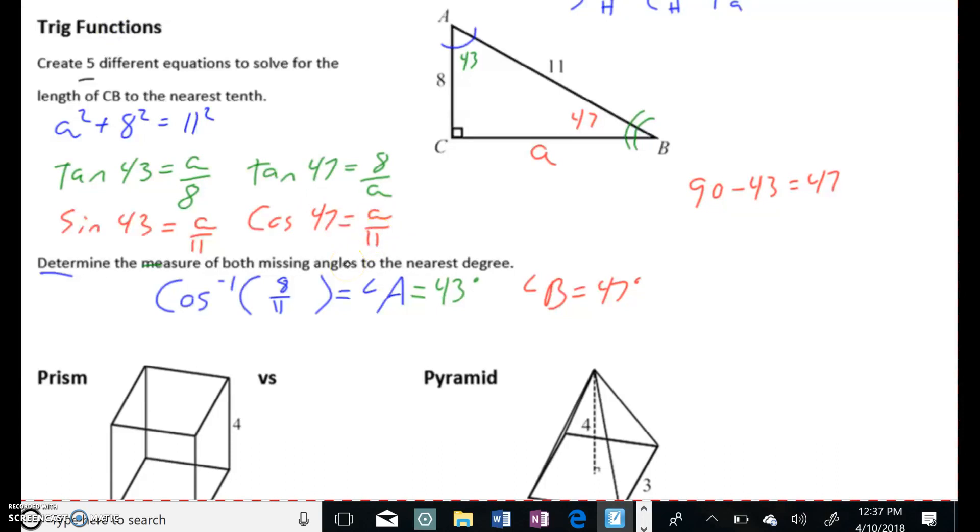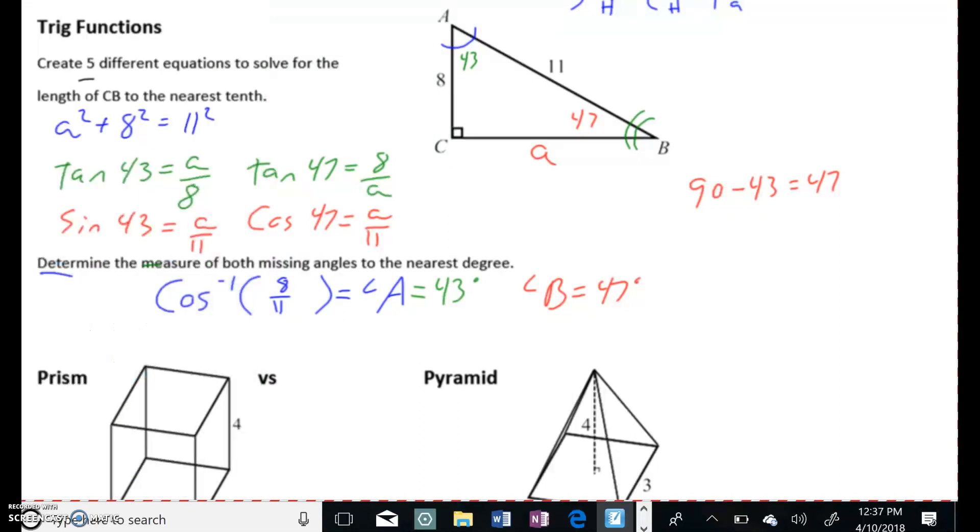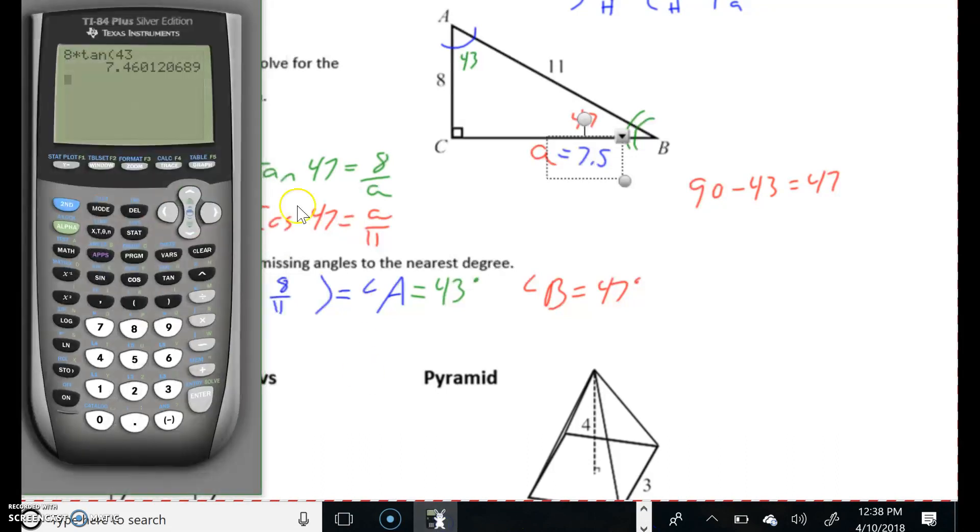Now, any one of these is going to give me the measure of that side. Like if I were to look at this one right here, I'd do 8 times tangent 43. So let me get my calculator back up. 8 times tangent 43. So 8 times tangent 43 is 7.46. That's what this is. So it's about 7... We'll round it to the nearest tenth. It didn't tell us to find it. Let's round it to the nearest tenth. Let's say 7.5.